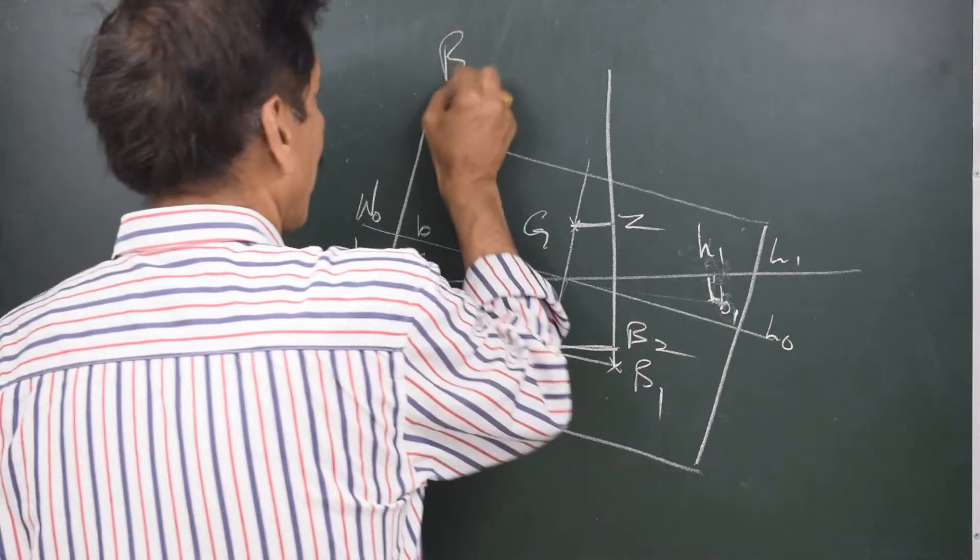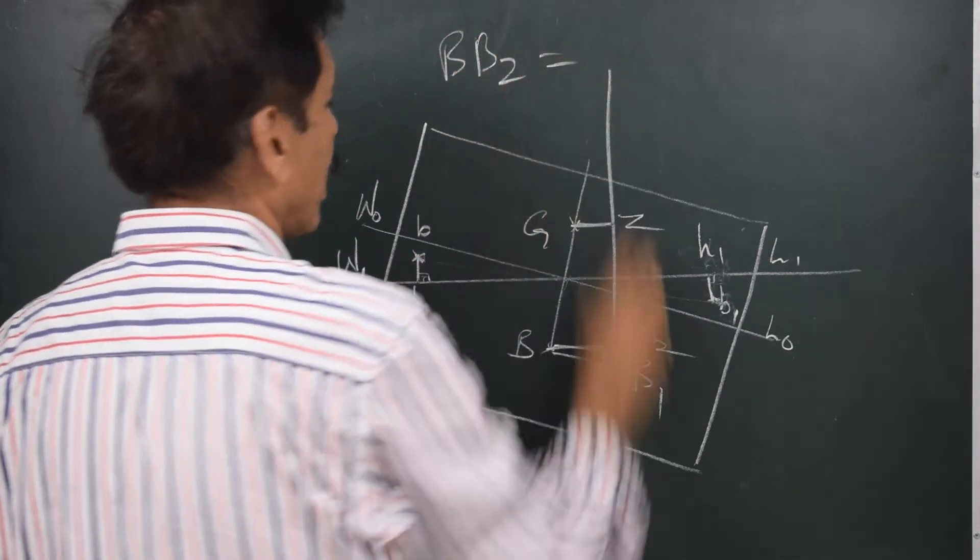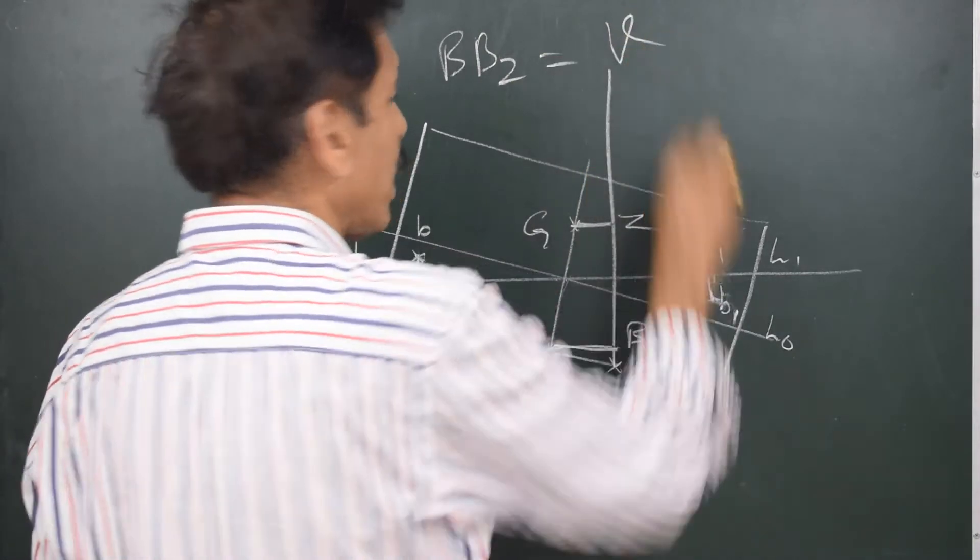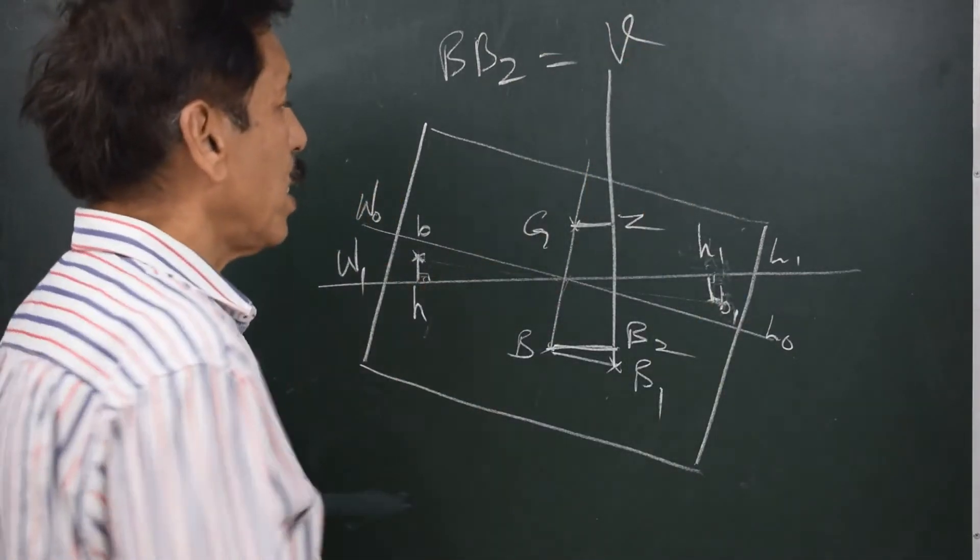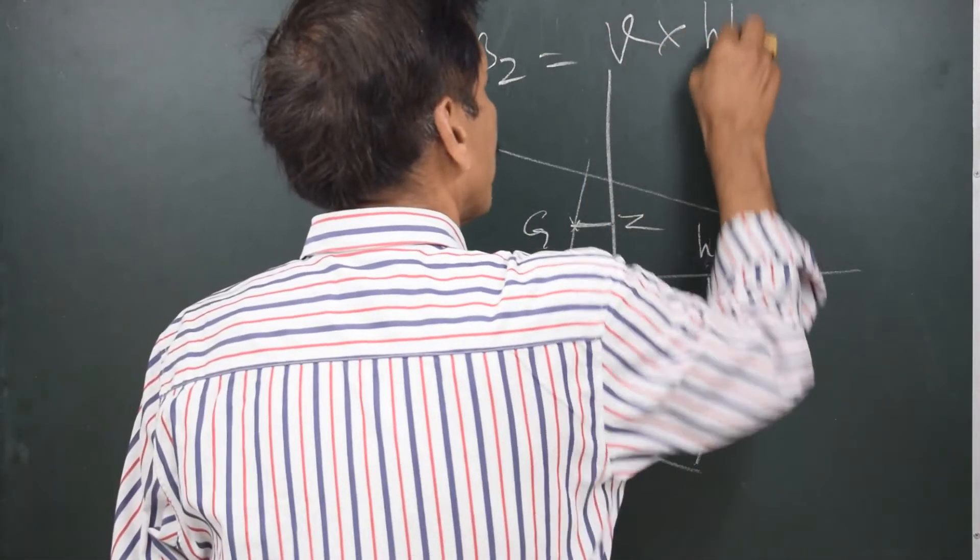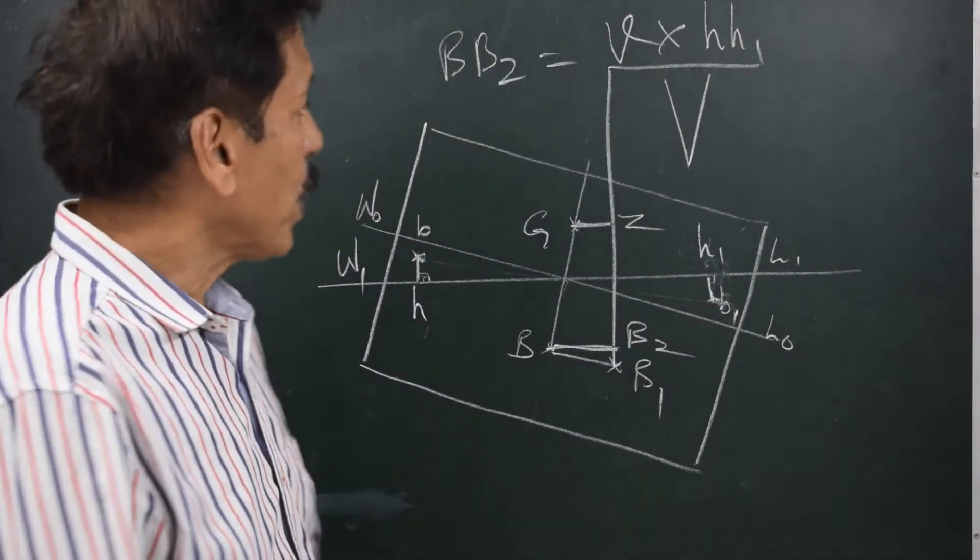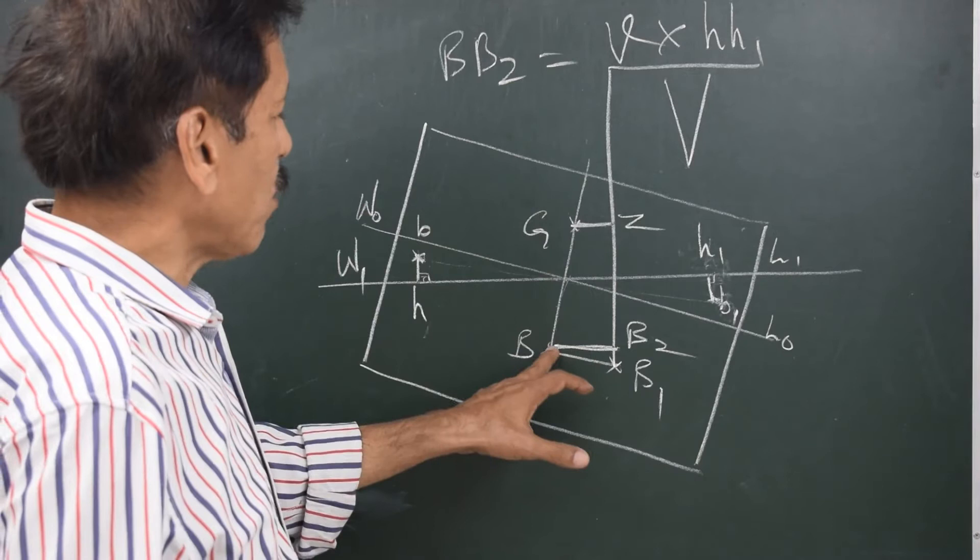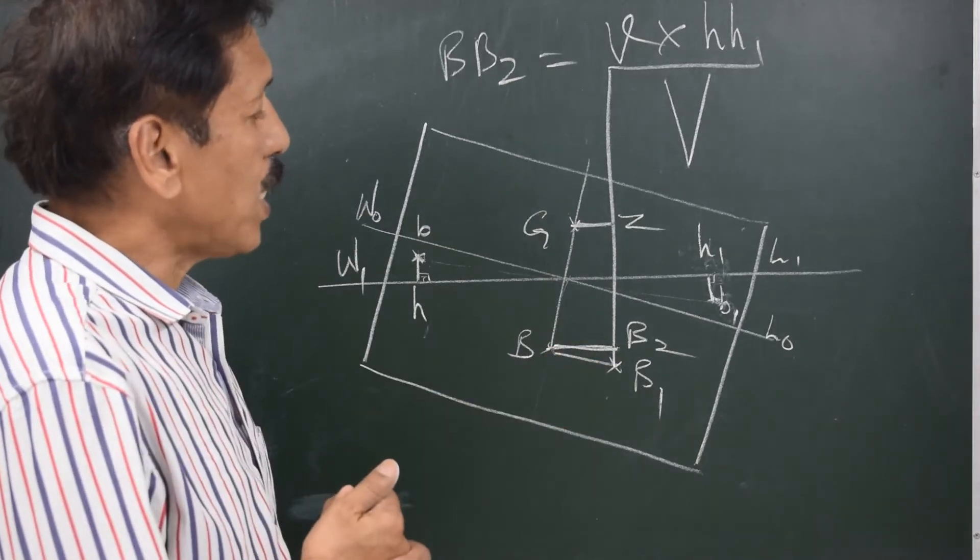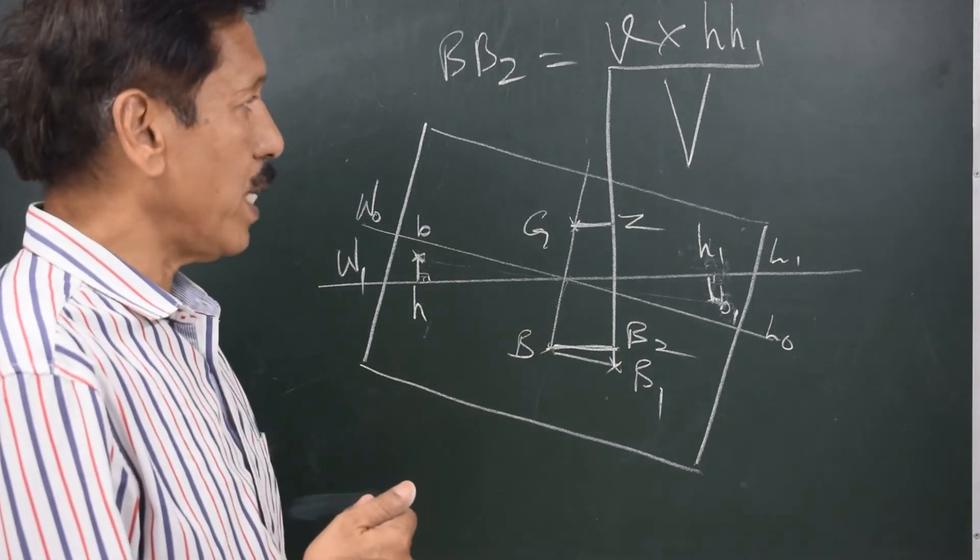So can I say BB2 is equal to small v, that is the volume of each wedge, multiplied by HH1 upon capital V, that is the underwater volume. So BB2, that is from here to here, is v HH1 upon capital V, right?